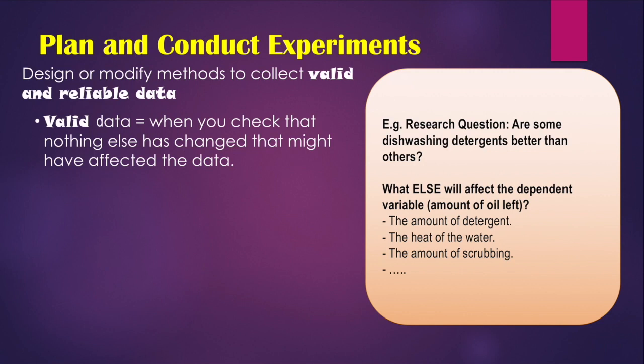So I have to think about it. When my research question is, are some dishwashing detergents better than others? And I change the different types of dishwashing detergent and wash them and see how much oil is left at the end. Well, what other things might affect how much oil comes off? Number one, the amount of detergent that you have in there — if you don't have the same amount of detergent, that's going to affect how much oil comes off.